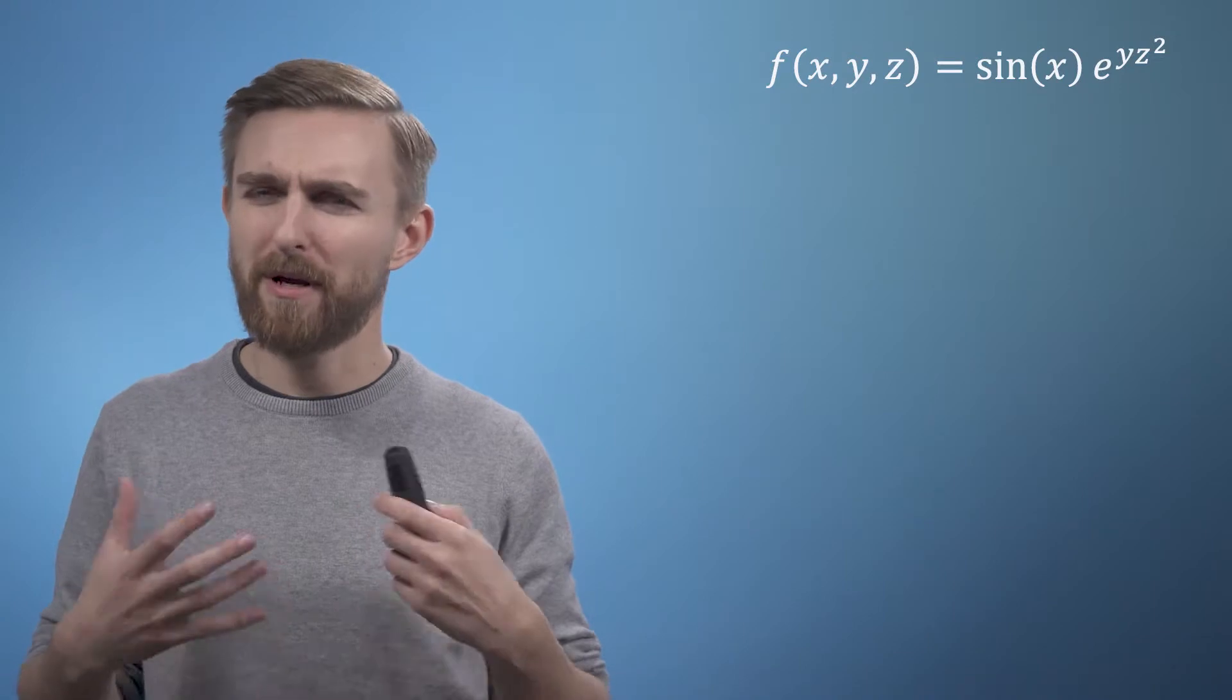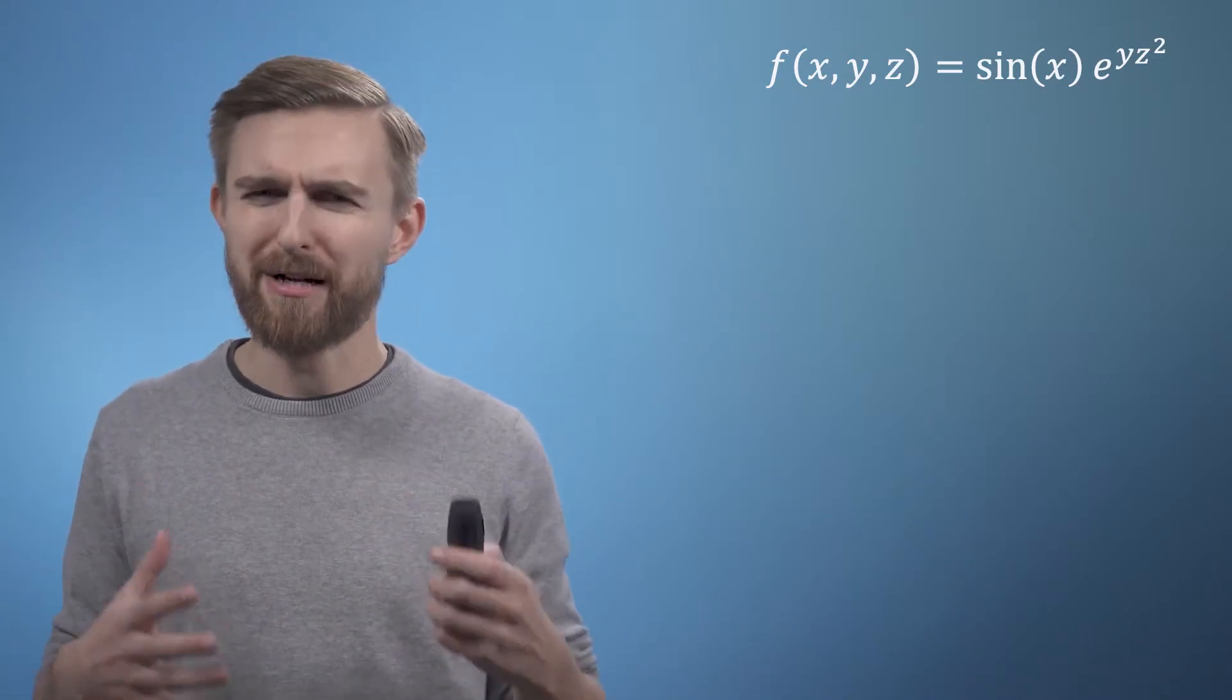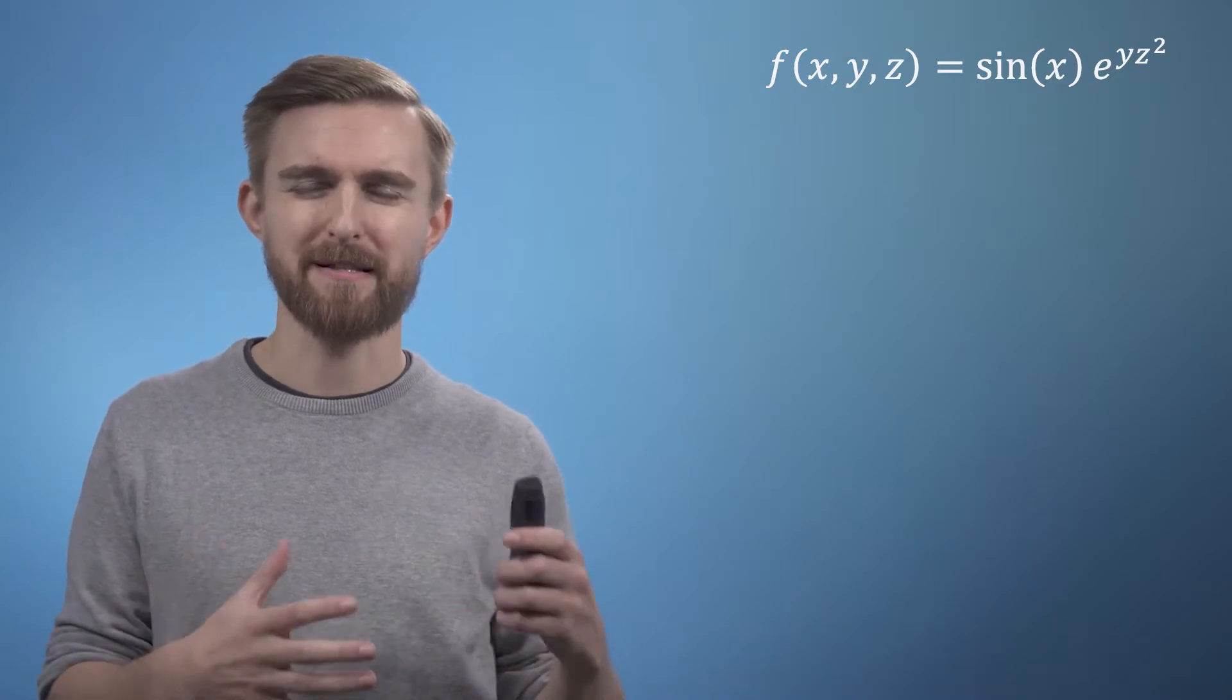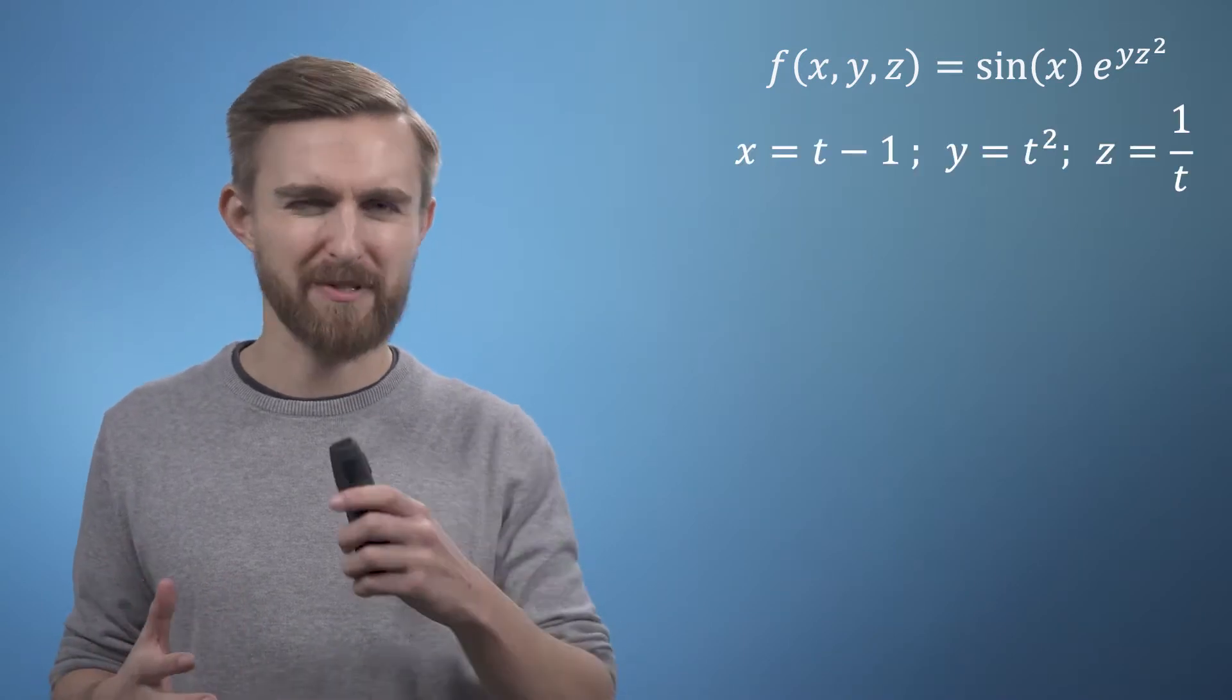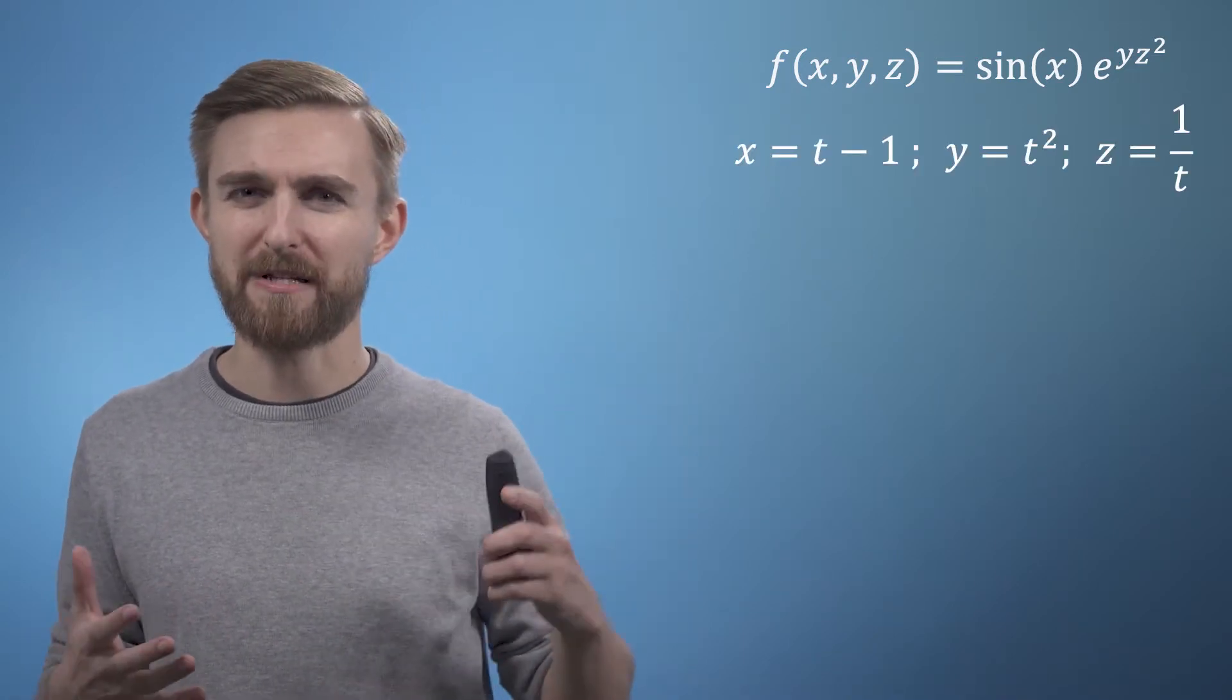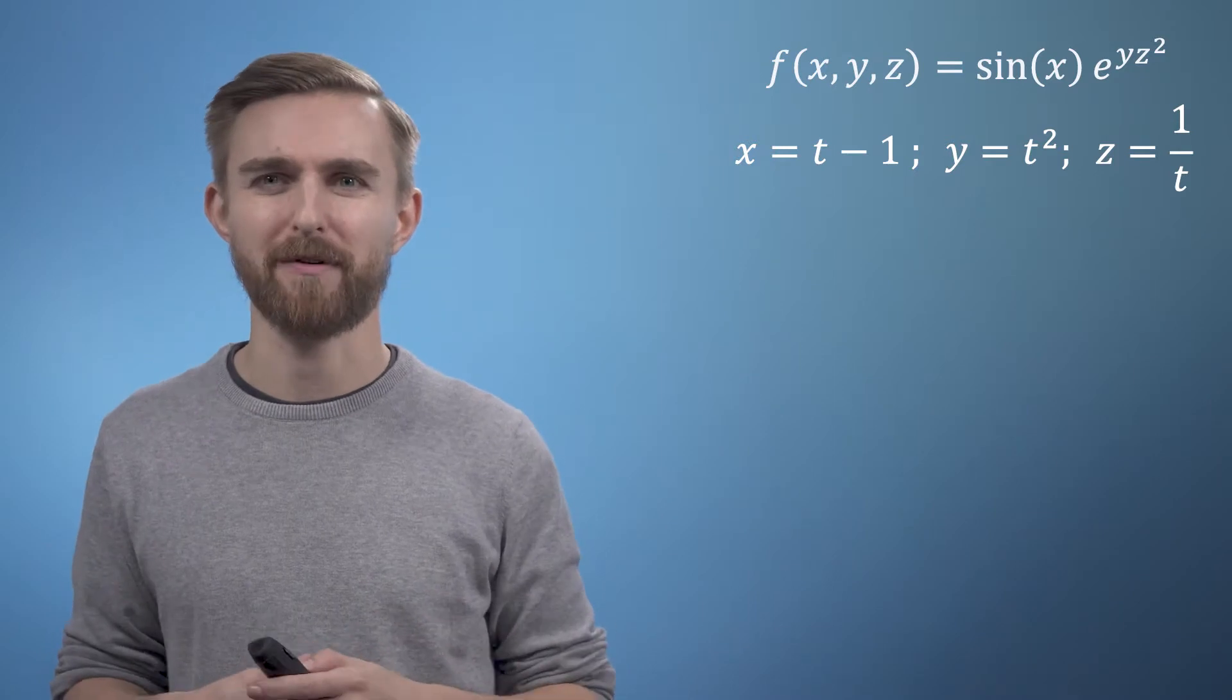Now that we have these three partial derivatives, we're going to introduce a new idea called the total derivative. Imagine that the variables x, y, and z were actually all themselves a function of a single other parameter t, where x equals t minus 1, y equals t squared, and z equals 1 over t.